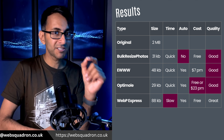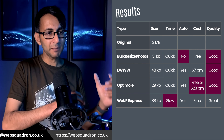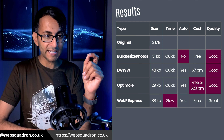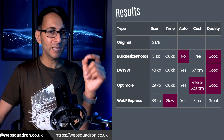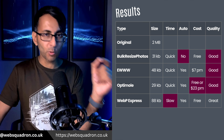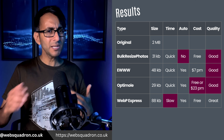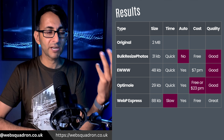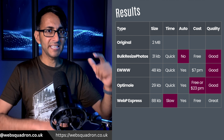This is where it gets super interesting — you can now see the actual sizes. The original was two megabytes. Bulk Resize Photos shrunk it down to 31 kilobytes. Just process that for a moment — 2,000 kilobytes down to 31. EWWW was 48. Optimal was 29. And WebP Express was the sharpest of the images but look at the difference in size — it's 88 kilobytes. You can also see in the time column that WebP Express is in red — it is slow when you add images.